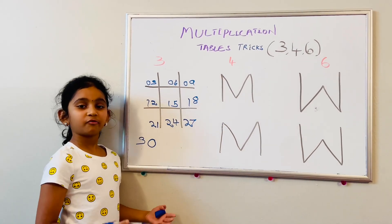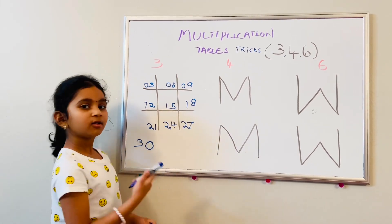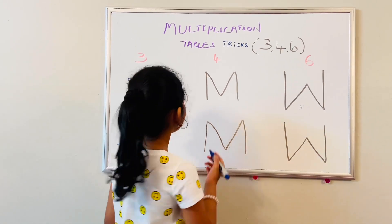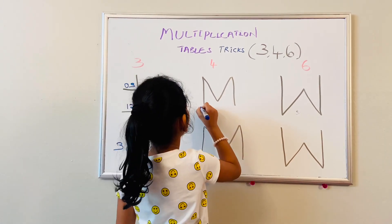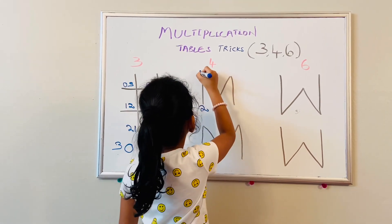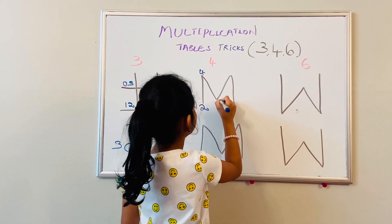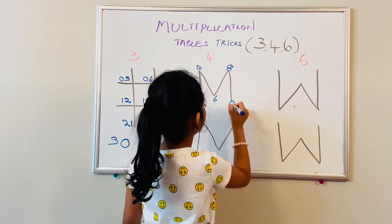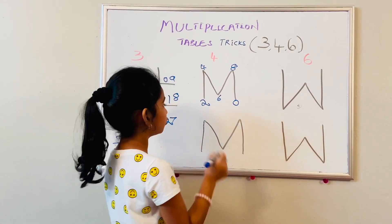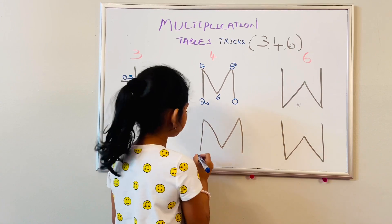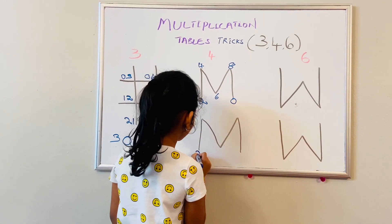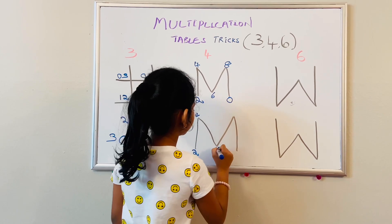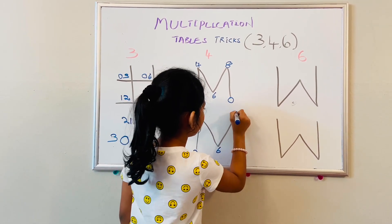Now let's go on to the fourth table. For the fourth table, write two, four, six, eight, zero — instead of ten, it's zero. Skip twos, just like the twos table. So let's write two, four, six, eight, zero.